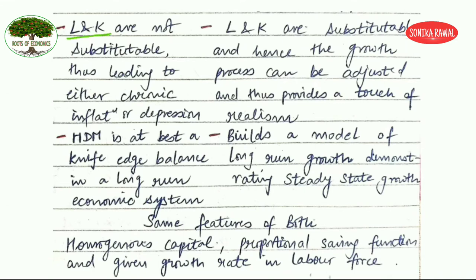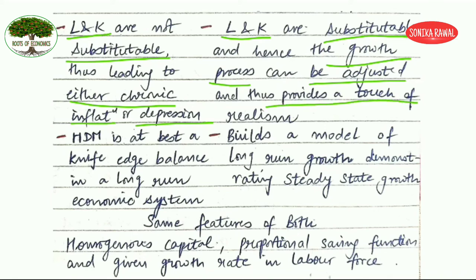The fourth difference is that in the Harrod-Domar model, labor (L) and capital (K) are not substitutable, thereby leading to either chronic inflation or chronic depression. But in the Solow model, L and K are substitutable because Solow considers a continuous production function. Hence the growth process can be adjusted, and this provides a touch of realism — the Solow model is more realistic compared to the Harrod-Domar model.